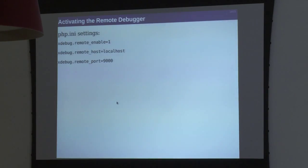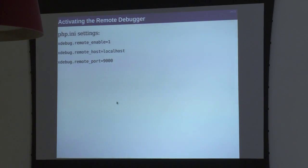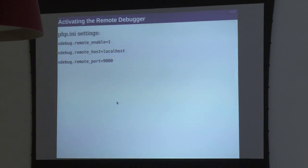You basically have to make two settings - actually only one really, but I'm showing all three. You need to turn it on with 'remote_enable.' Then you need to tell XDebug the host - give the hostname or IP address of the machine where your IDE is running. So if it's okay for you to run a web server on Amazon, the address you need to provide is the IP address of the machine where your IDE runs. If it's in your corporate network behind a NAT firewall or NAT device, that won't work without some tricks.